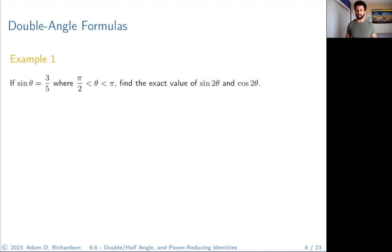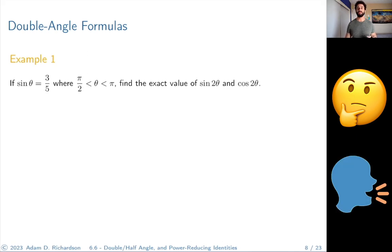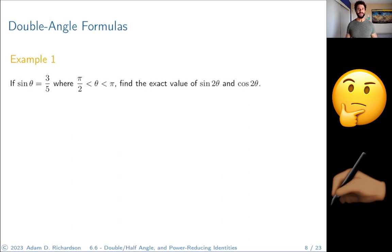Let's try an example. Suppose sine(θ) = 3/5 where θ is between π/2 and π, so it's in the second quadrant. Find the exact values of sine(2θ) and cosine(2θ). Think about how you would approach this — what formulas would you use? Try working it out on your own using the double angle formulas for sine and cosine.